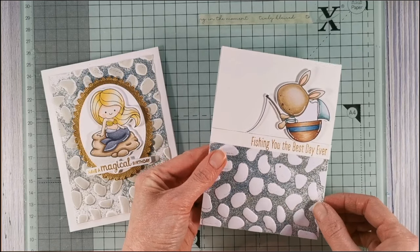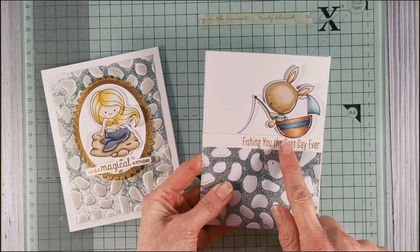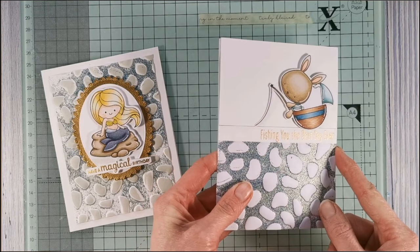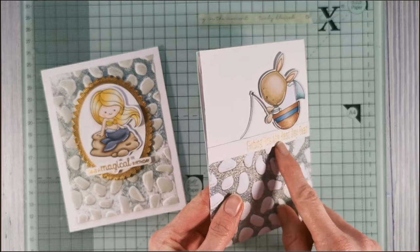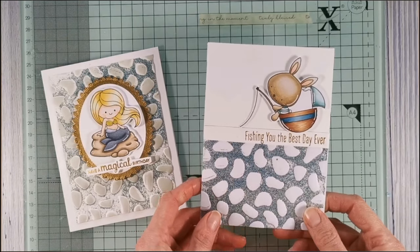Again I stamped it with the same gold embossing powder as on the other card because I think it picks out the gold in that sea salt powder really nicely. And then I've just added that on underneath.